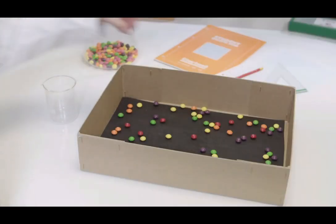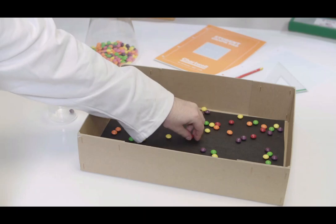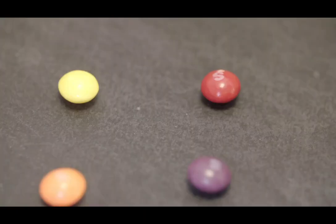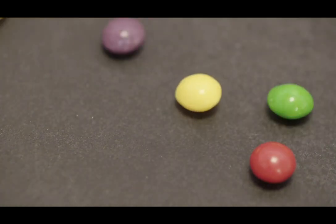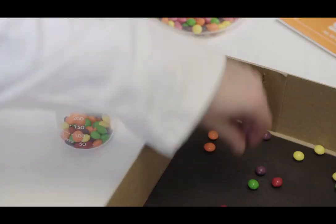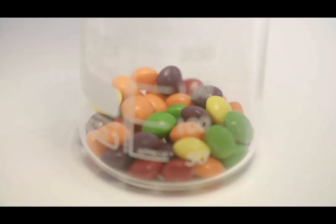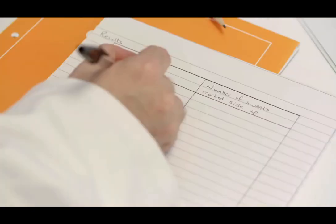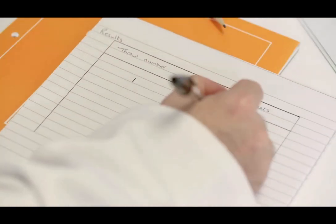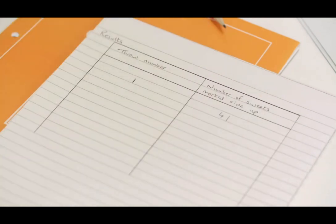The undecayed sweets will be thrown again, so they are picked out and placed back into the plastic cup or beaker. It is important to count the number of sweets picked out. The results of the first throw are recorded in a table by writing down how many sweets landed marked side up.